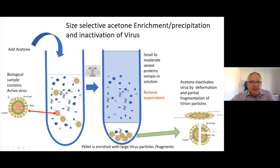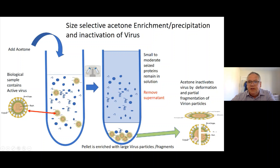Another major advantage of using acetone as a precipitant is that it actually deactivates the virus — there's a lot of published literature showing the virus is inactivated by acetone precipitation. In terms of setting up a clinical assay this is very important, because your biological sample will have active virus and you may have to manage that within a category three containment facility. But once you've acetone precipitated it, you've got dead virus — it inactivates probably by deformation of the viral particle and its proteins — and you can actually do the work on the bench.